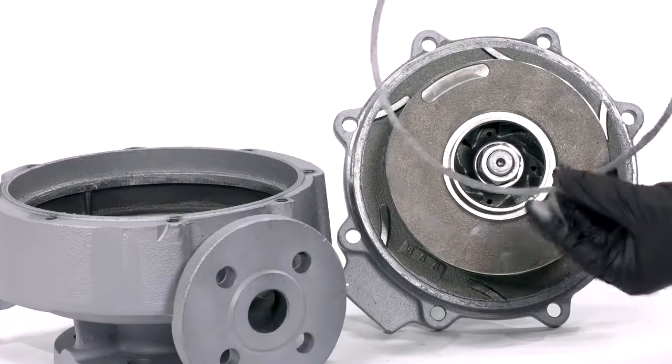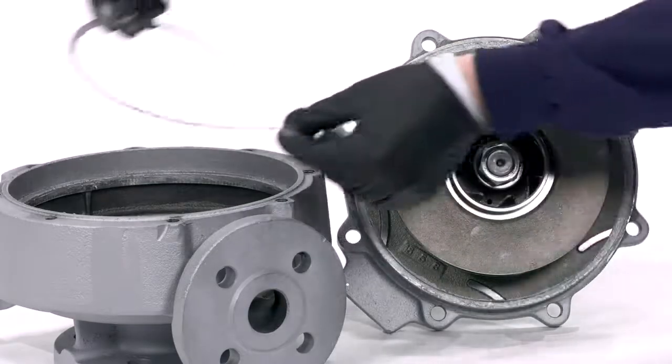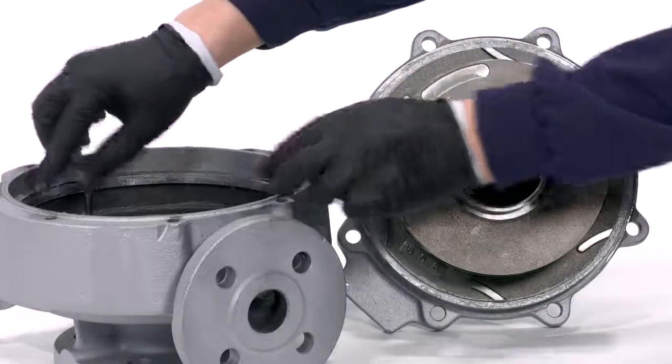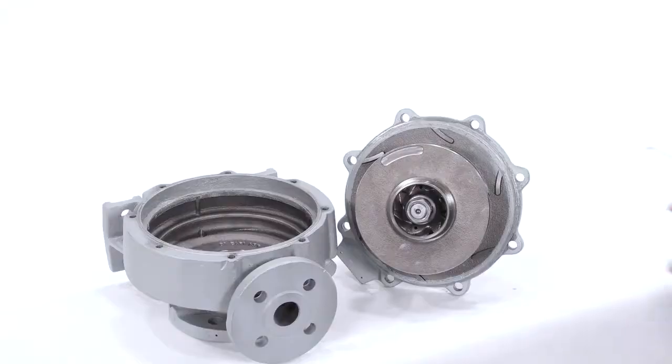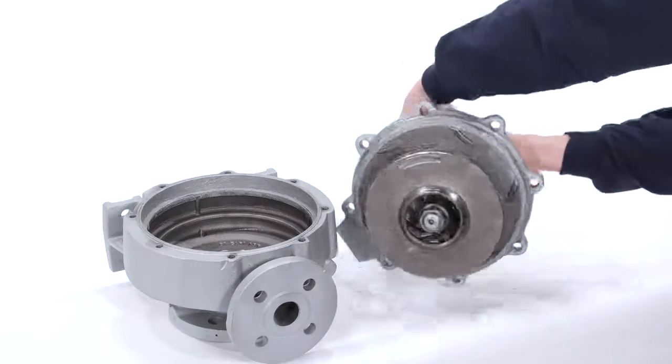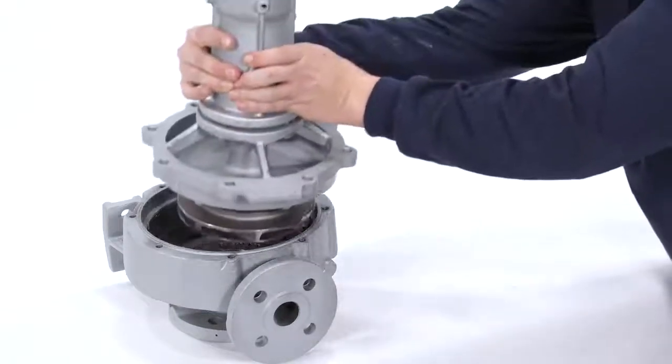Put the graphite laminated case gasket into the casing. Install the cartridge unit into the pump casing and tighten the eight casing bolts with a 17mm wrench.